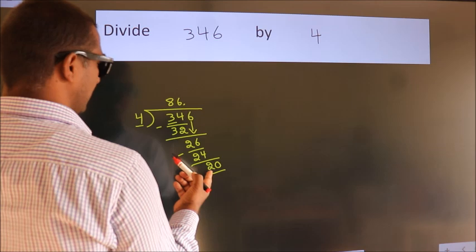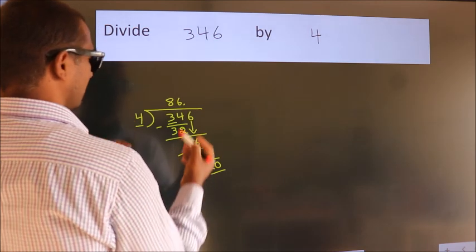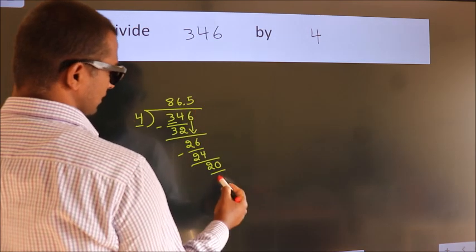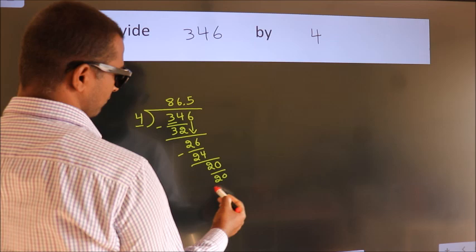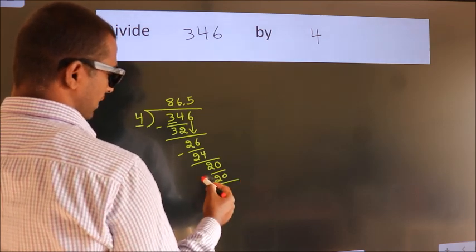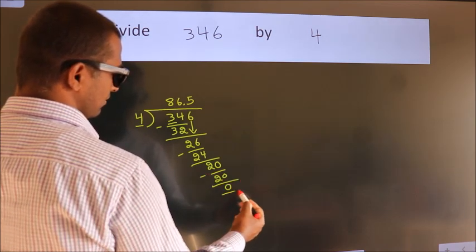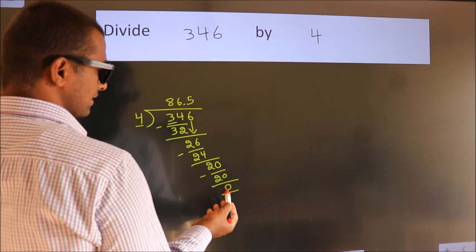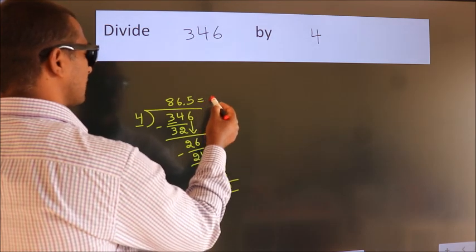When do we get 20? In 4 table. 4 times 5, 20. Now we subtract. We get 0. We got remainder 0. So this is our quotient.